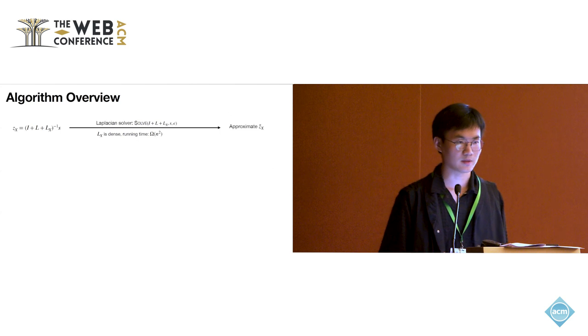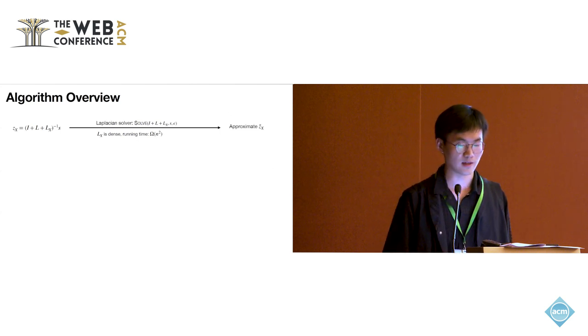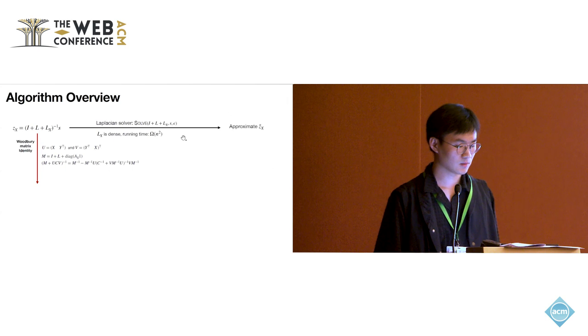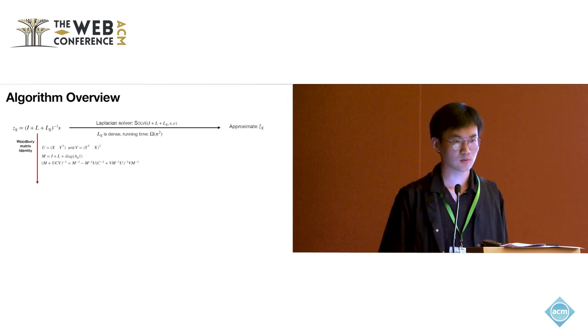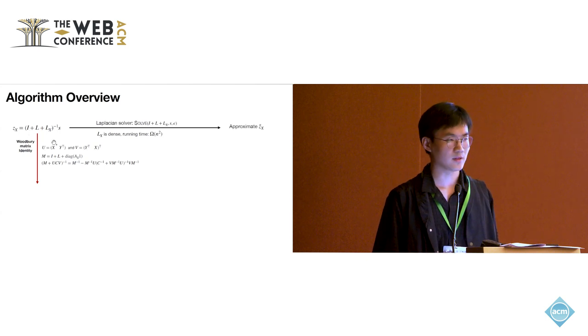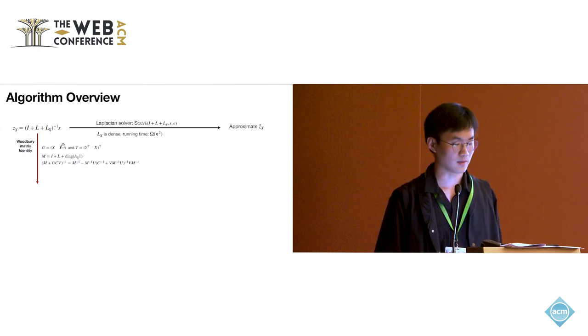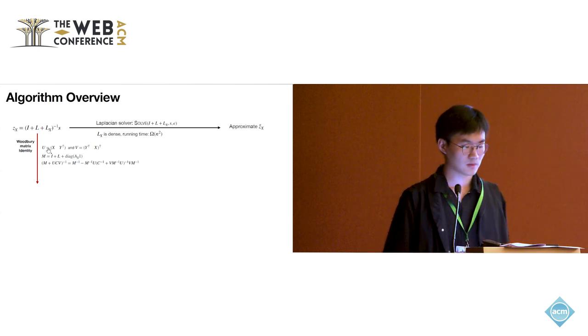So what can we do here? Actually, we have a smart way to reduce the running time to near linear. We do this with the Sherman-Morrison-Woodbury matrix identity. To do so, we need to rewrite this expression of AX by three new matrices, which are composed by X, Y, and the original graph.